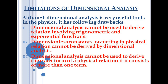The third drawback is that dimensional analysis cannot be used to derive the exact form of a physical relation if it consists of more than one term — that is, if the terms are in the form of a sum or difference. Only if the relation is of product type can we use dimensional analysis. For sum or difference type relations, we cannot use dimensional analysis.